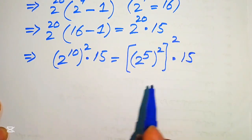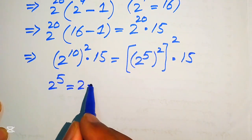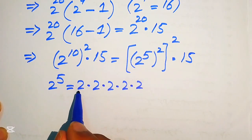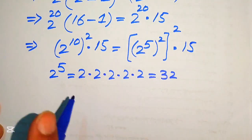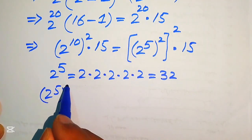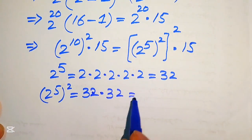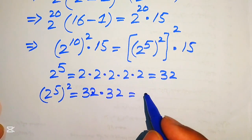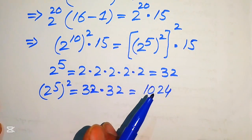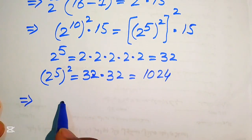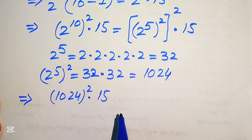We find the value of 2 to the power of 5 by multiplying 2 five times: 2, 4, 8, 16, 32. So 2 to the power of 5 equals 32. Then 2 to the power of 5 squared means 32 multiplied by 32, which equals 1024. So 2 to the power of 10 equals 1024, and therefore 2 to the power of 20 equals 1024 squared.